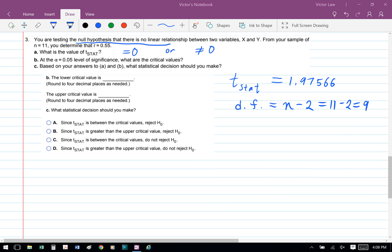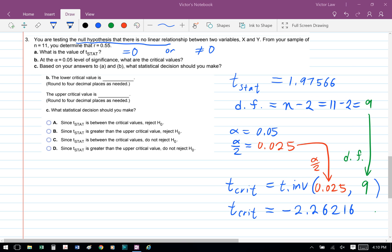In part b, we're asked to find the critical value at the 5% significance level. We're going to find the t critical using Excel. We're going to use the formula equals t dot inv bracket, and then we're going to put 0.025, which is the alpha divided by 2, comma, and we're going to put 9, which is the degree of freedom.